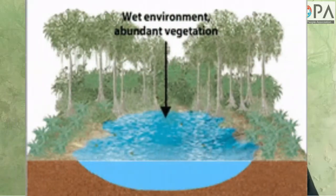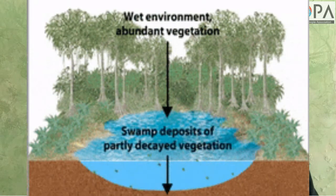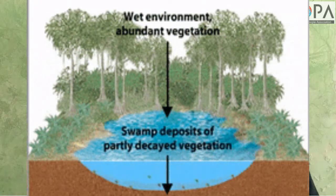The formation of coal takes place millions of years ago, when the forests on the earth get buried inside the earth due to some natural events. The layers of soil get deposited over them. Due to high pressure of the soil layers and the temperature from the earth's crust, these buried dead tree remains get converted into coal.